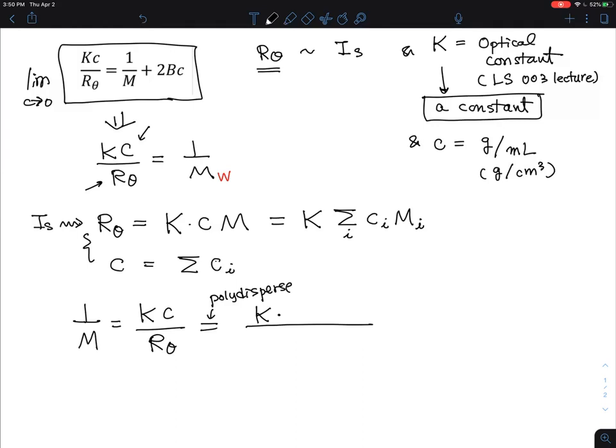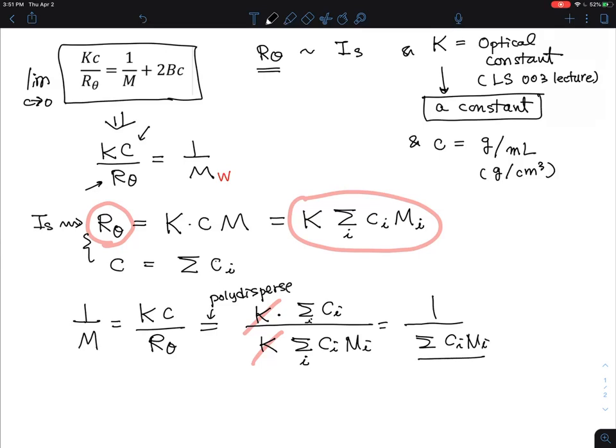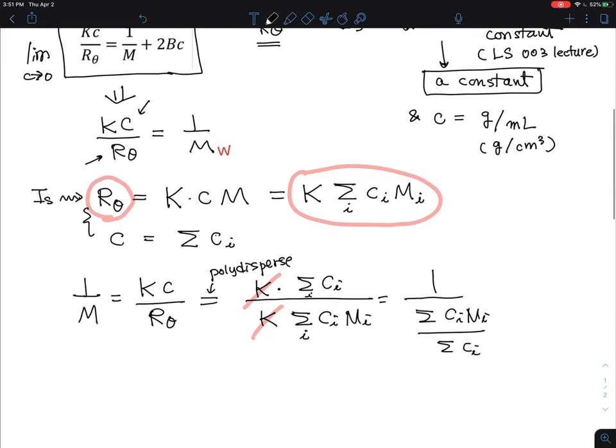K, you leave it as it is. This will be a summation of ci, and Rθ for polydisperse sample is this one. So I'm going to write K times the summation of ci·mi. The K essentially cancels away, and then I rearrange it to the summation of ci·mi divided by the summation of ci.